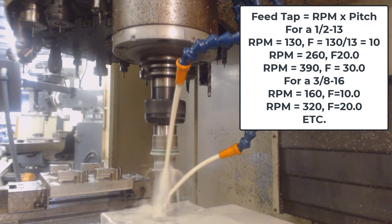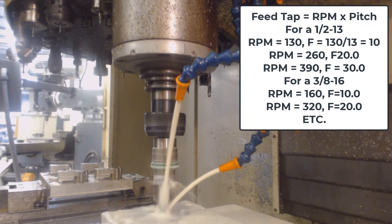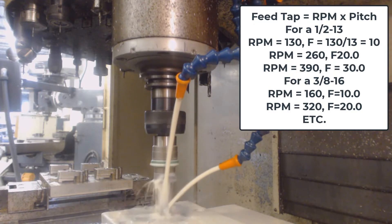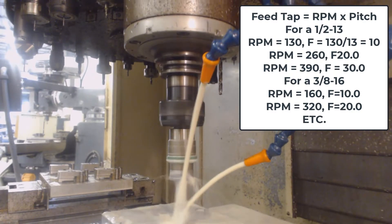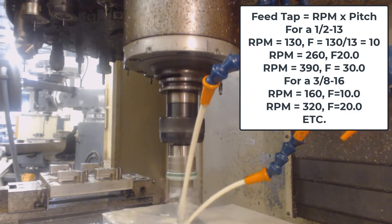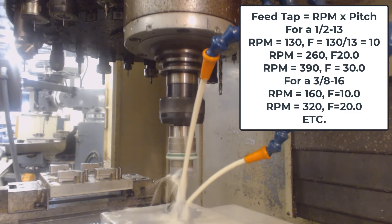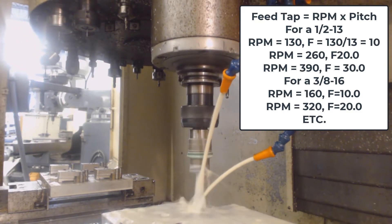For example, if I spin the ½ inch 13 tap at 130 revolutions per minute, then the feed will be 10 inches per minute. Or, if I spin the tap at 260, the feed will be 20. Or, if the RPM is 390, the feed will be 30.